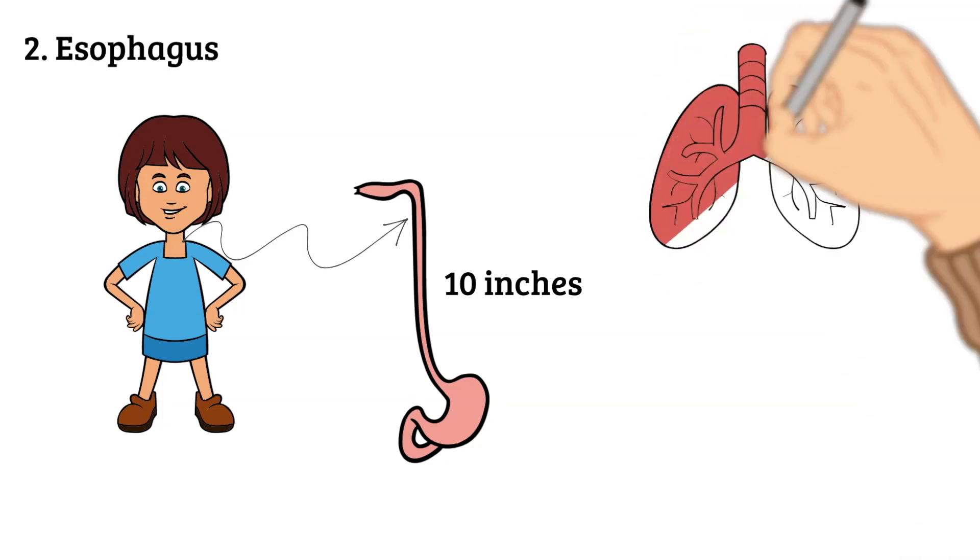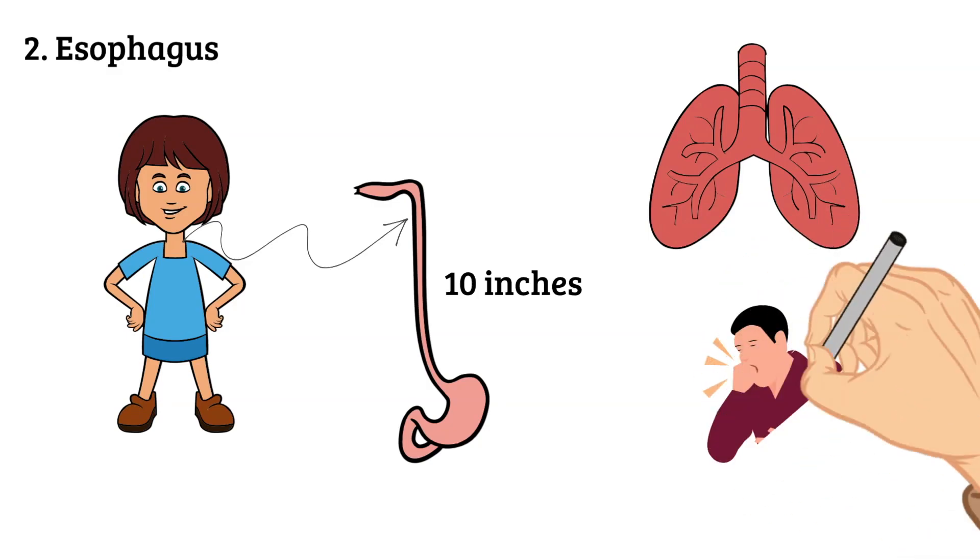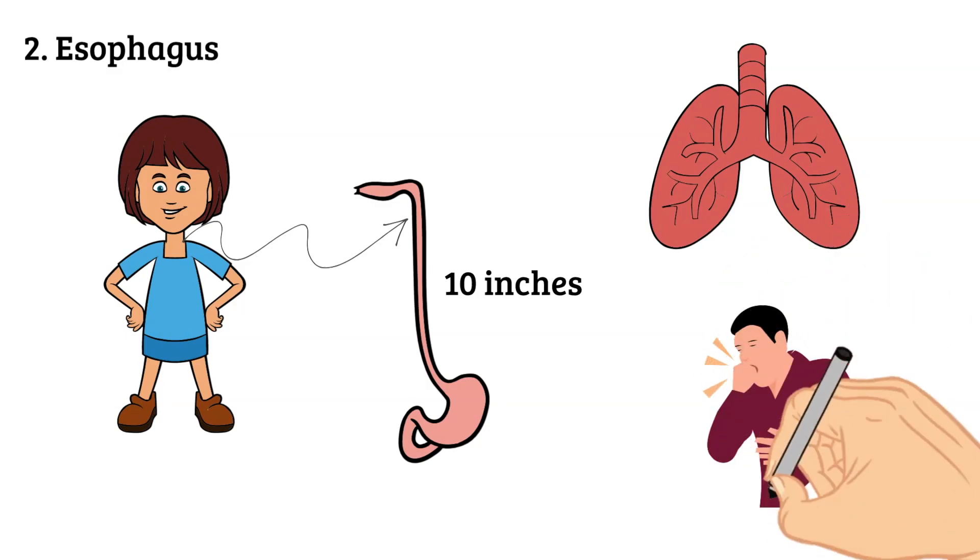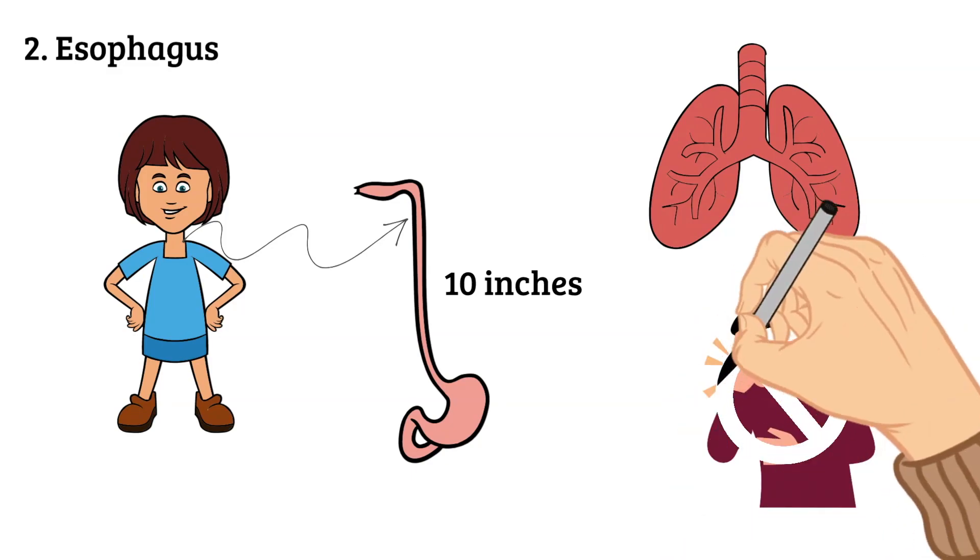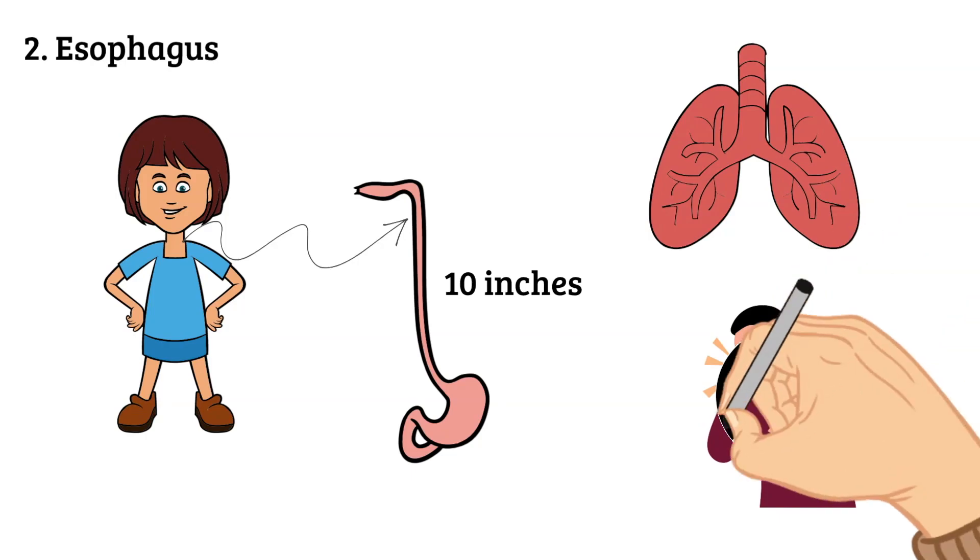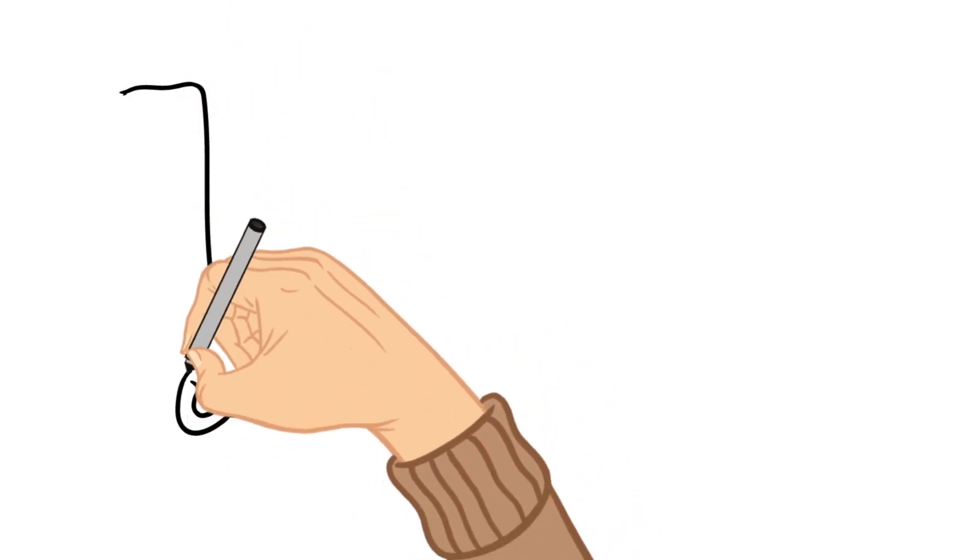So there is a flap at the back of your throat called the epiglottis, and it flaps down over your windpipe to make sure that when you swallow, the food you are swallowing does not go down your windpipe but instead down your esophagus.